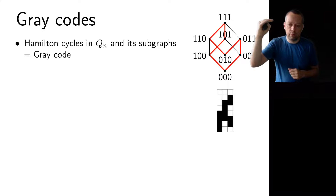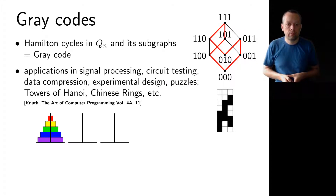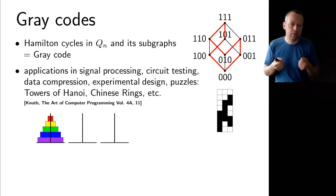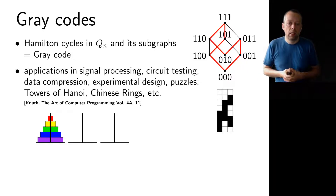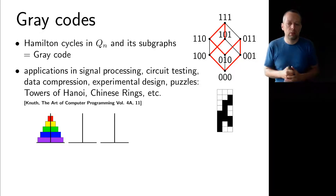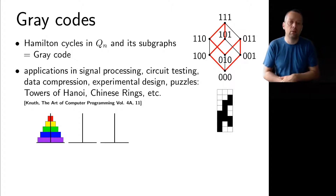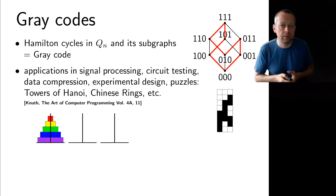As you go from one row to the next you only change the color of a single box. Grey codes have a large number of applications, for instance in signal processing, circuit testing, data compression, experimental design, and also in puzzles. The towers of Hanoi problem and the Chinese rings problem have very deep connections to grey codes. A lot of this material is covered in Knuth's book, The Art of Computer Programming, in volume 4a.